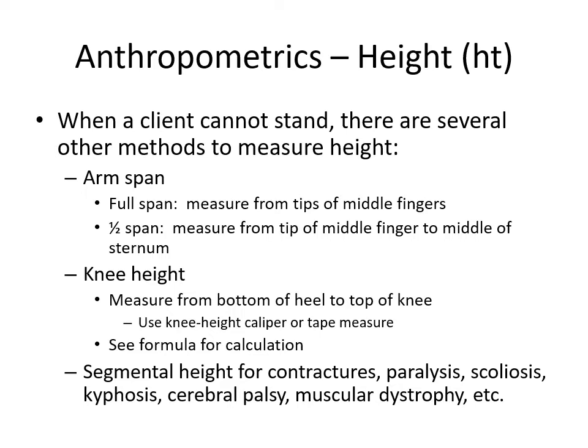When a client cannot stand, there are other methods to measure height. The arm span method measures from middle fingertip to middle fingertip. If the patient is taller than you, use half span — from the tip of the middle finger to the middle of the sternum. Knee height measures from the bottom of the heel to the top of the knee using a specialized caliper; you then plug that number into a formula to estimate height.